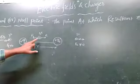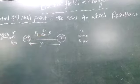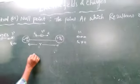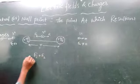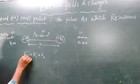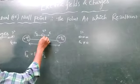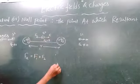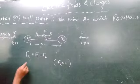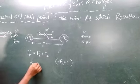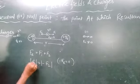So the point at which the resultant electric force is zero is called the Null Point, meaning F1 plus F2 — the resultant electrical force at this position — is equal to zero. Therefore F1 is equal to minus of F2, but their magnitudes are the same.